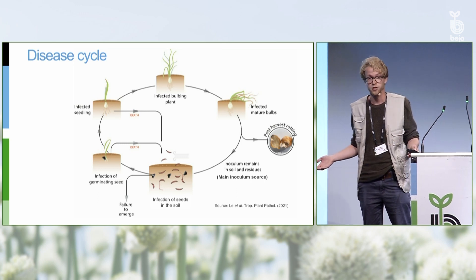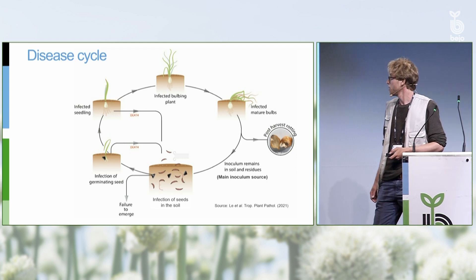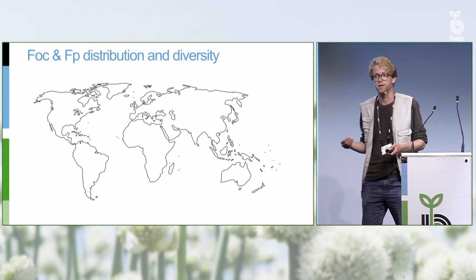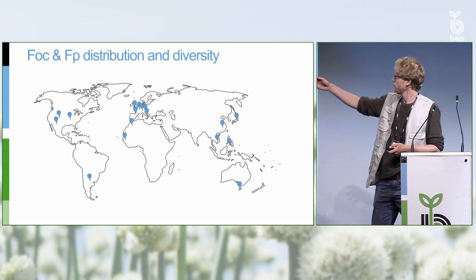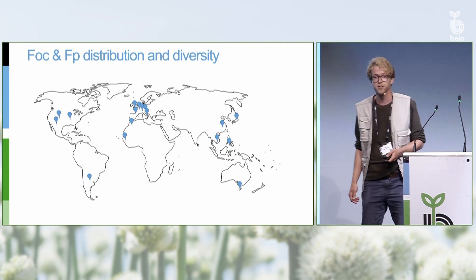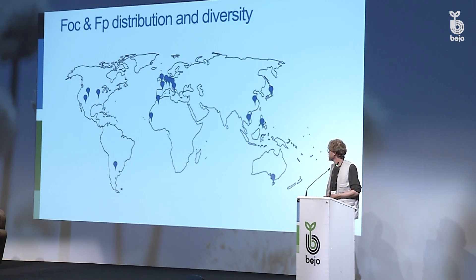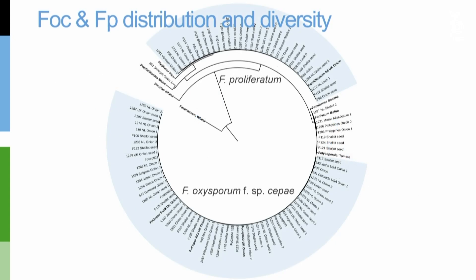So you can get huge losses during storage. We would also like to know how this disease is distributed in the world and what we are actually dealing with. We collected isolates from across the world from various locations and performed DNA sequencing on those isolates to identify which species we are actually dealing with. When we compared the DNA, we found out that at least two-thirds of all the isolates belong to Fusarium oxysporum, and about one-third to Fusarium proliferatum, indicating that both species are really crucial causers of this disease.